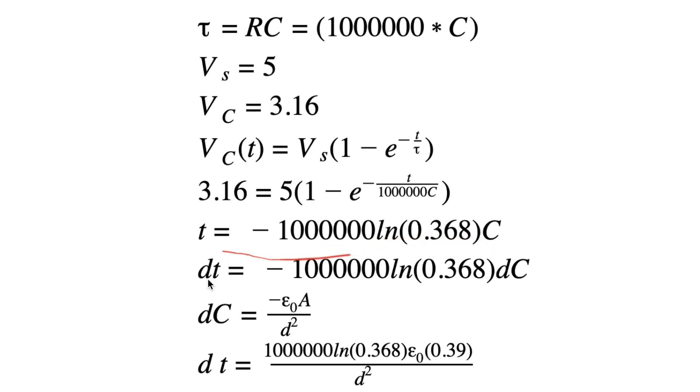And when we differentiate, we get dt is equal to this times dc. And mentioned way earlier in the video, we already calculated the derivative of capacitance, or the change in capacitance. So we just plug that in, and boom, we got the final equation, which is the change in time, or the change in signal delay, given the distance between the two plates.